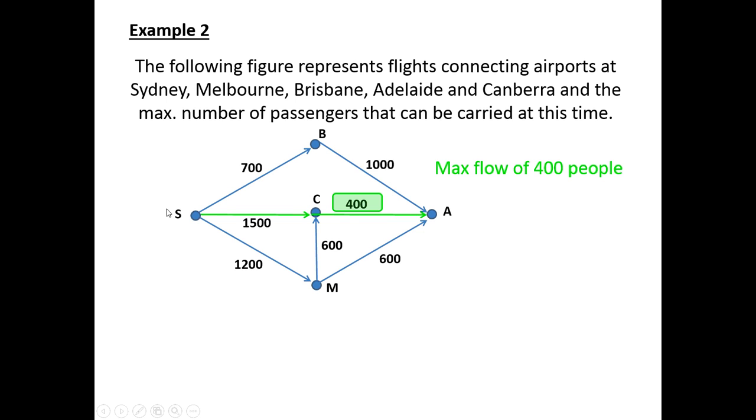By inspection you can see you can go from Sydney to Canberra to Adelaide. Now whilst 1500 can get on from Sydney and fly to Canberra, only 400 can fly from Canberra to Adelaide. So that restricts that particular path from Sydney to Canberra to Adelaide to a maximum flow of 400 people.